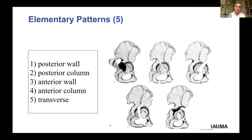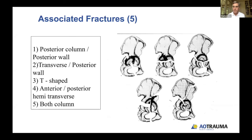Letournel described, as most people know, five elementary patterns: the posterior wall, the posterior column, the anterior wall, the anterior column, and the transverse fracture. Then there are five associated patterns, which are combinations of two of the elementary patterns: posterior column plus posterior wall, transverse plus posterior wall, the T-shaped fracture, the anterior plus posterior hemitransverse, and the both column fracture.